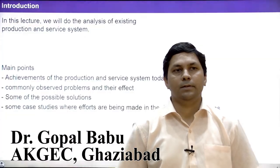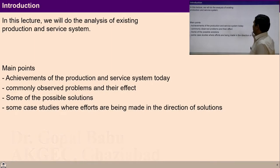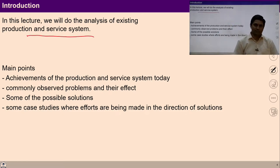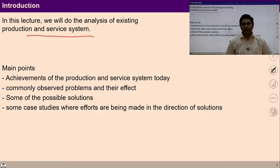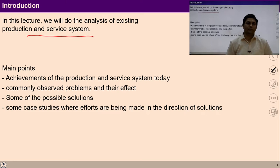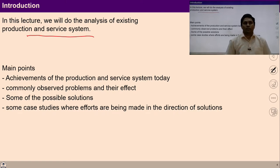In this lecture we will do an analysis of the existing production and service systems. In previous lectures we talked about production, types of production processes, lead of productions, and policies related to productions. Now we are going to analyze the existing production and service system critically.